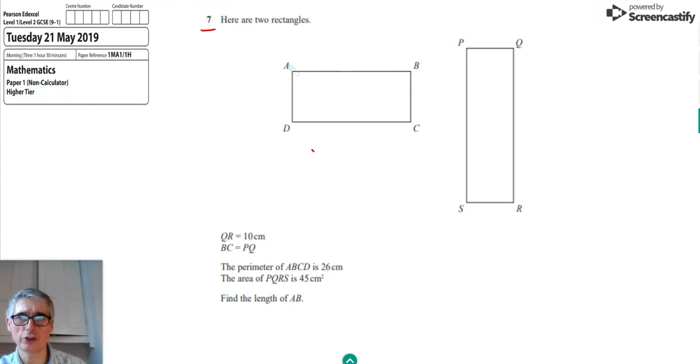So this is a question involving two rectangles, ABCD and PQRS.